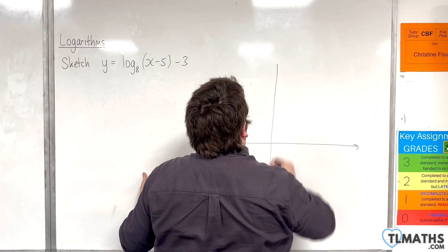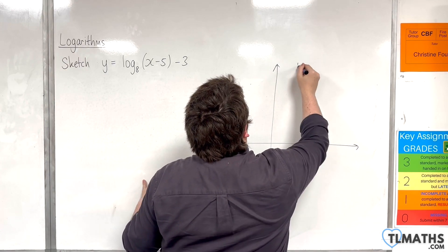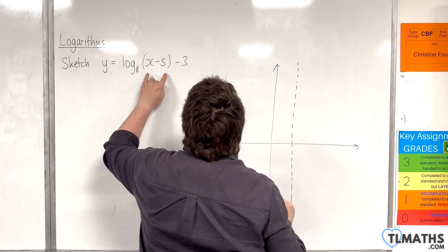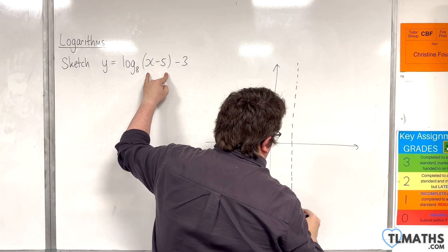So first of all, draw on your vertical asymptote, which will be when x is 5, to make that bracket 0.